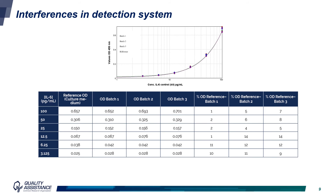After determination of the optimal dilution, this dilution needs to be tested for interferences with the detection system. A dilution series of IL-6 control was tested in the absence and presence of the sample prepared at the lowest valid dilution — a 24-fold dilution in our case. The agreement between the dilution series in the presence and absence of the preparation must be within plus or minus 20% when comparing optical densities. As observed in this graph, no interference with the detection system was observed, as optical density variation did not exceed 20%.